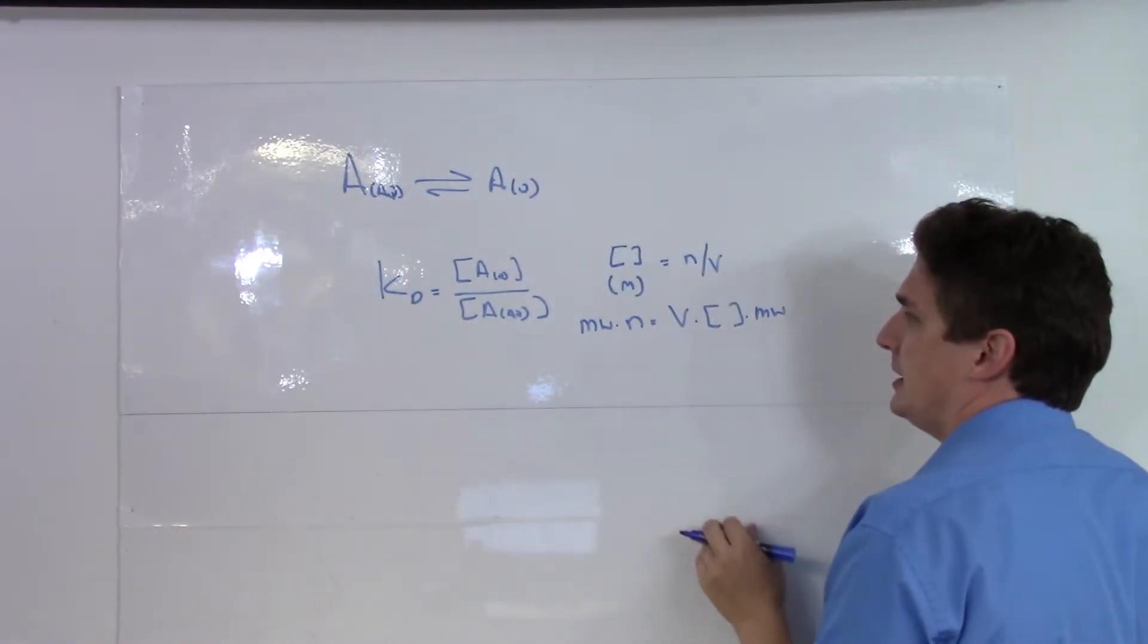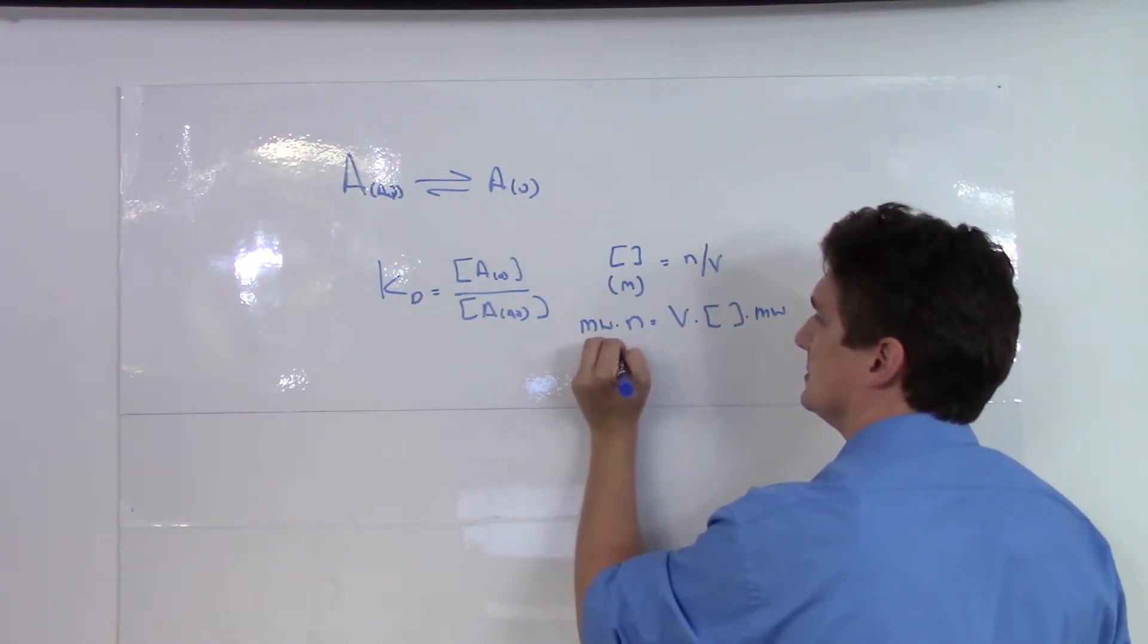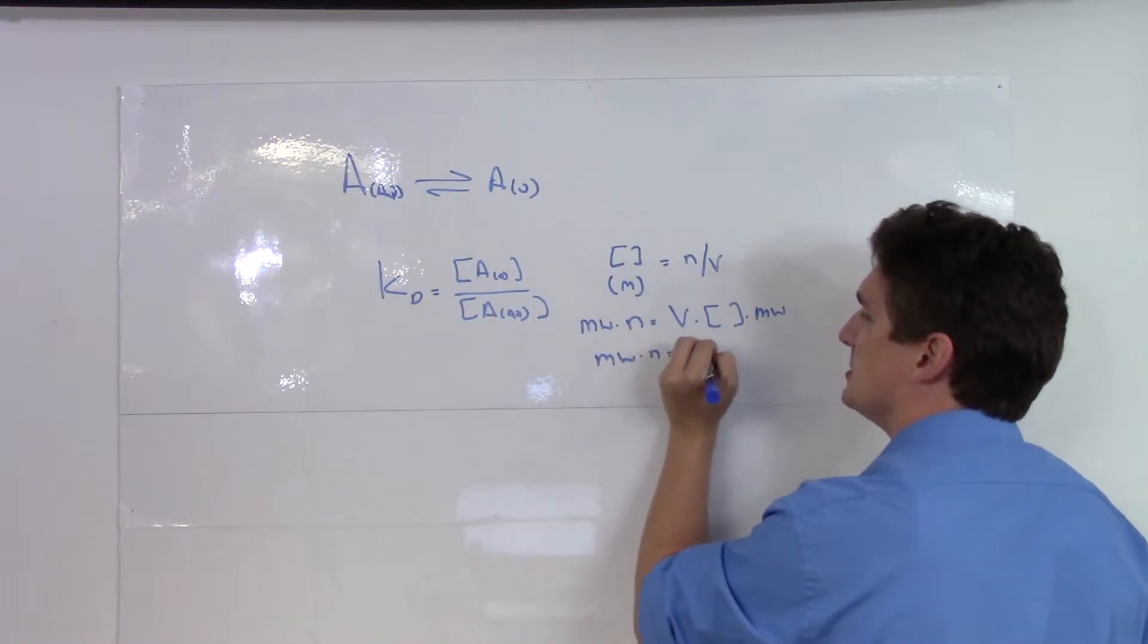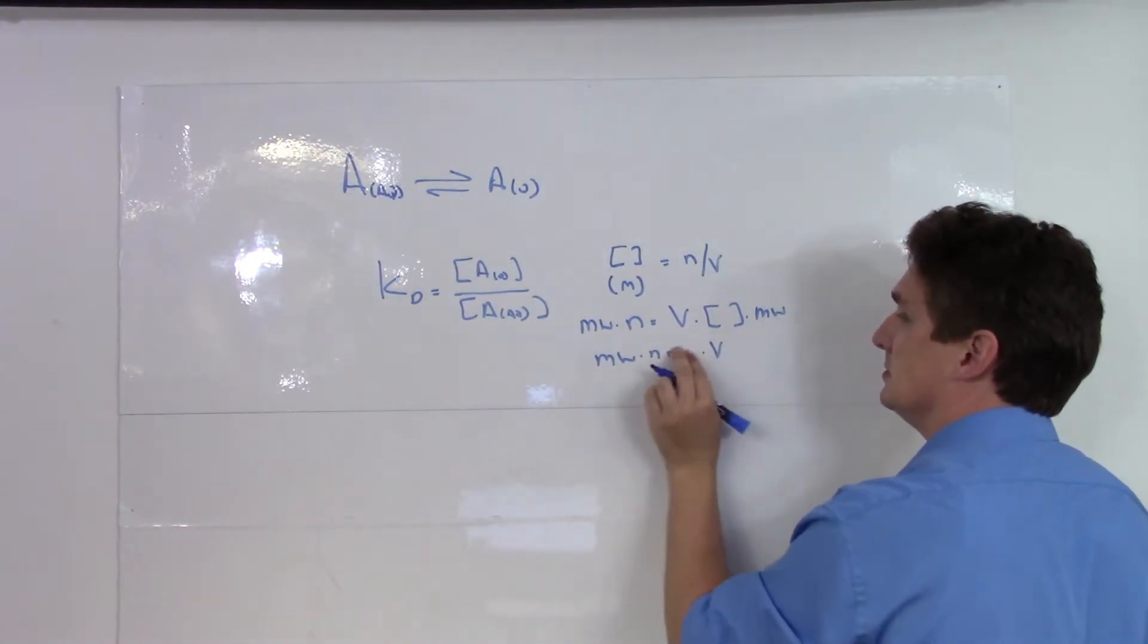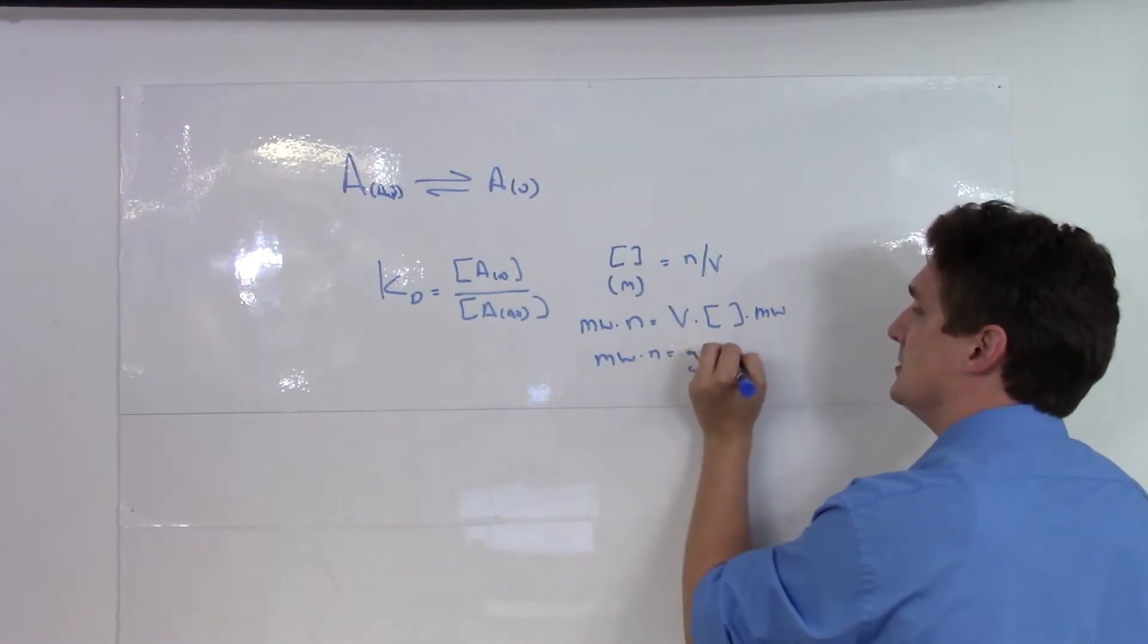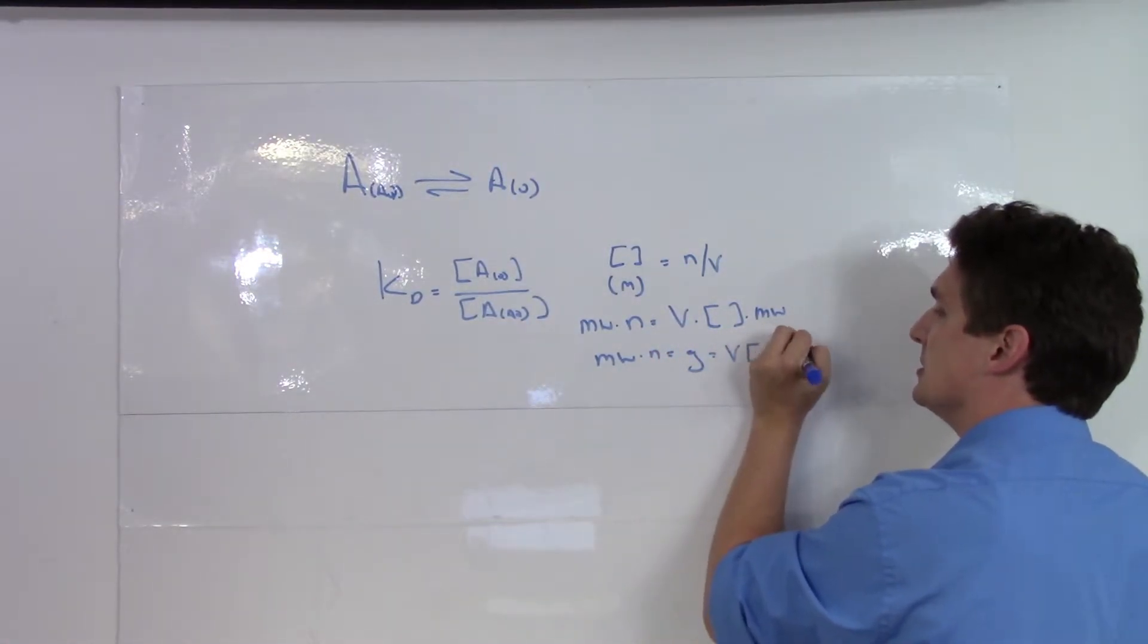And so we get that the molecular weight times N is grams, which equals grams, volume times concentration times the molecular weight.